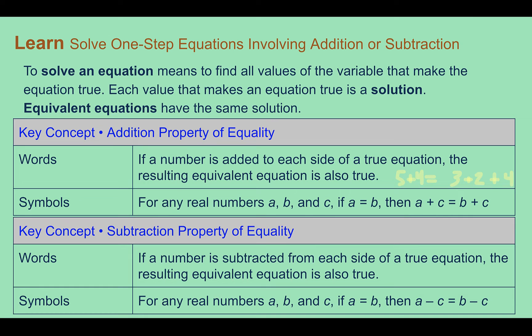The same thing works for subtraction. The subtraction property of equality is pretty much the same as the addition one — you're just subtracting from both sides. Using the same situation, 5 equals 3 plus 2, if we subtract 4 from both sides, we end up with an equivalent equation that's also true: 5 minus 4 is 1, and 3 plus 2 minus 4 is also 1. Taking away the same from both sides doesn't change your answer.